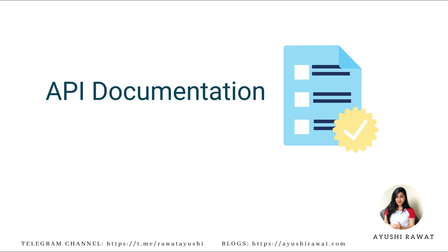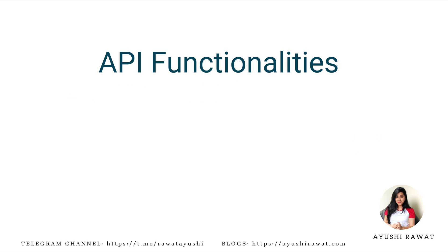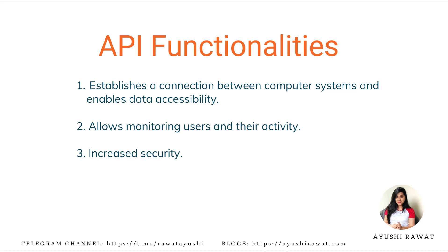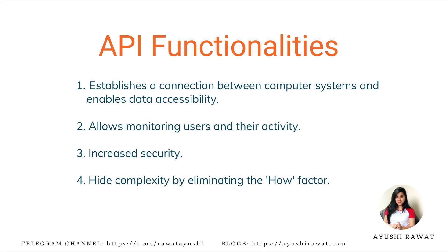APIs also have documentation for the same. Now I hope you understand what an API does. Let's have a look at some of the basic API functionalities. API establishes connection between computer systems and enables data accessibility. It allows monitoring of users and their activity in a controlled manner. It increases security by adding extra protection layers using keys. And it hides complexity by eliminating the 'how' factor, as you do not need to worry about what goes on in the backend.